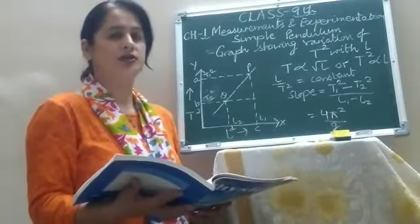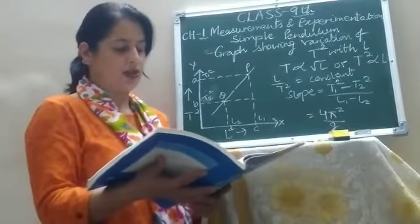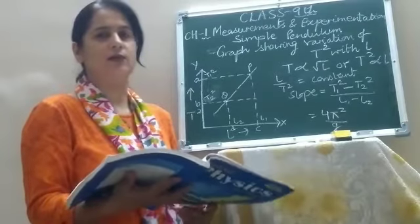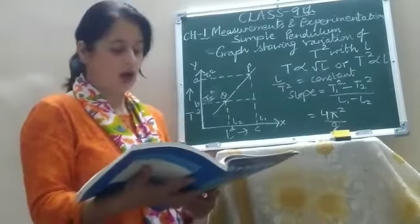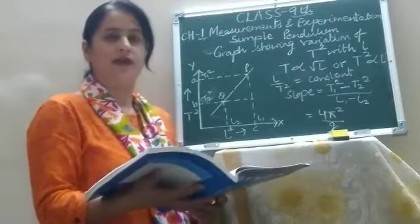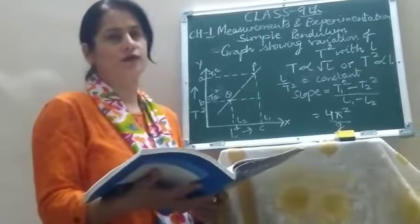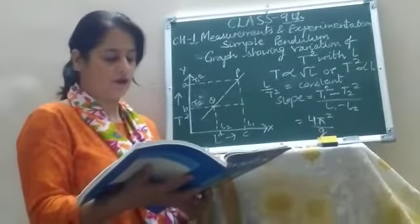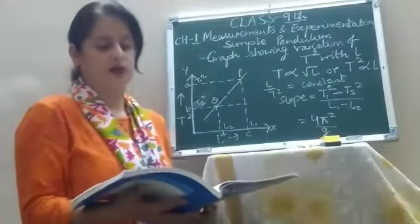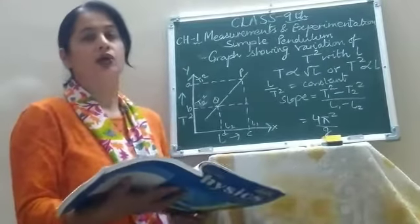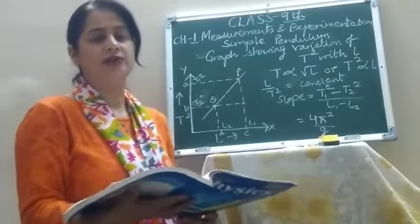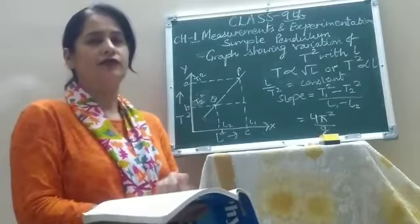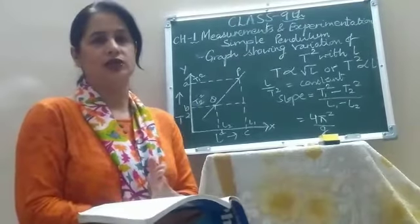How can you measure the time period? To measure the time period of the simple pendulum, you displace the bob slightly. It will begin to move to and fro about its mean position after releasing it. Now you note down the time t for 20 complete oscillations, because it is very difficult to note down the time taken for one complete oscillation.